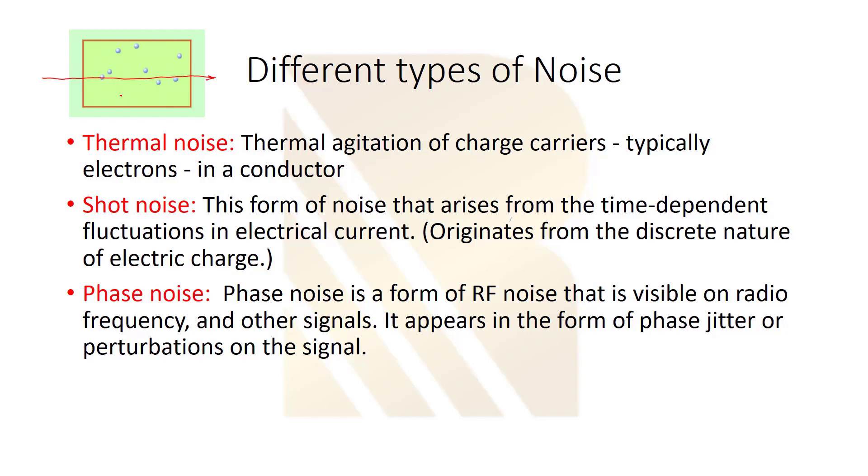The third one is really important: phase noise. We are going to talk about it in upcoming sessions. I can explain it briefly here. Imagine that we have a signal, this black one here. If you have phase noise, you will have phase variations. As you see, the phase here changes all the time. This is called phase noise, and it appears in the form of phase jitter.